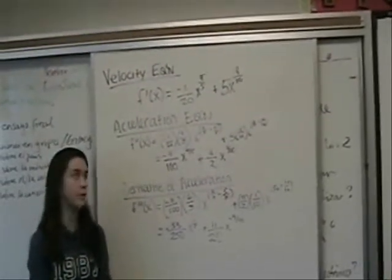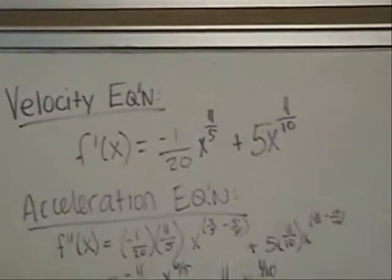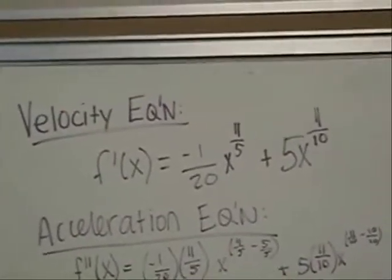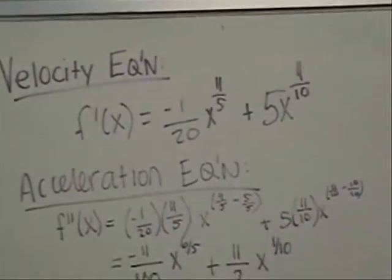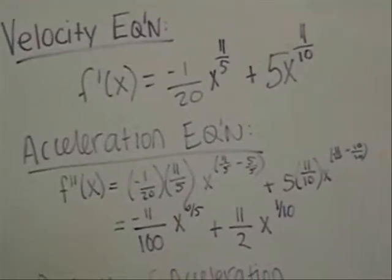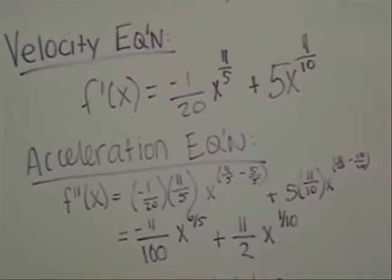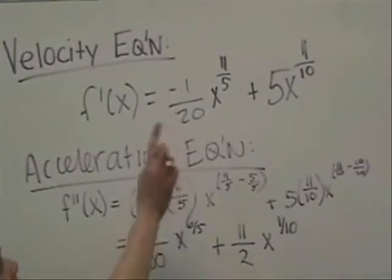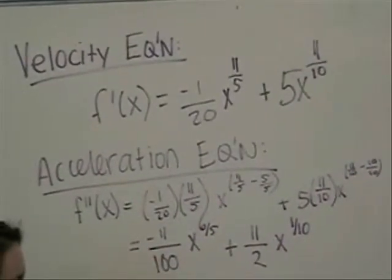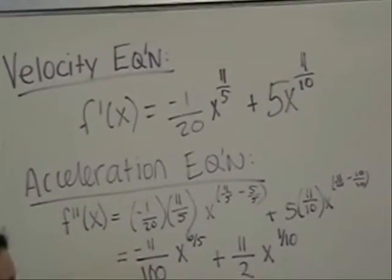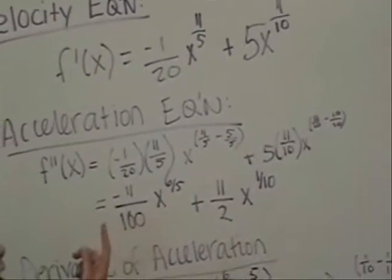So our initial velocity equation was negative 1/20th x to the 11 fifths plus 5x to the 11 tenths. In order to find the acceleration equation we used the same principle as we did to find the derivative of the displacement equation. So we will first bring down the power of the velocity equation which was 11 fifths and multiply it by the coefficient and this will give us negative 11/100ths.